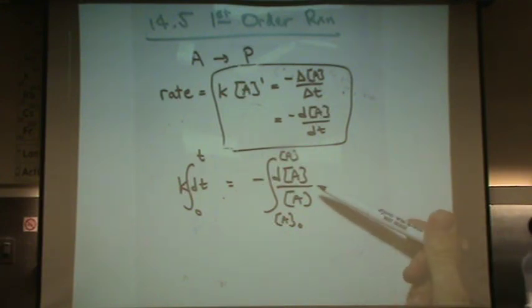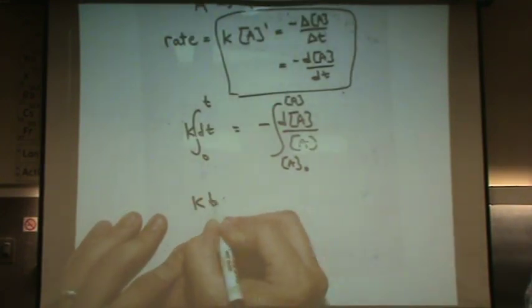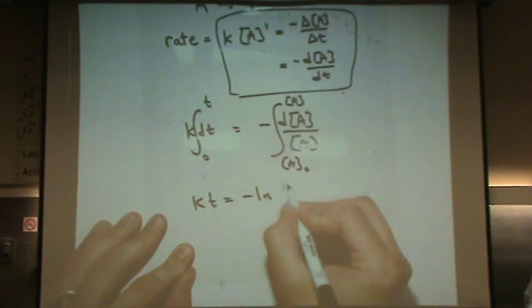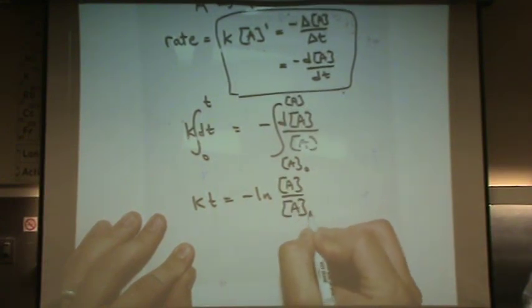What's the integral of one over x? The natural log. So kt equals minus the natural log of [A] over [A]₀. Just plugging in the points of the integral.